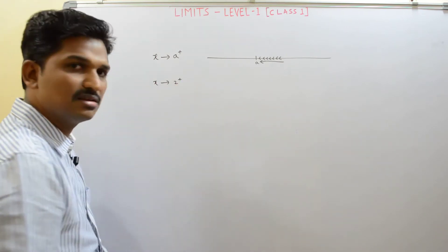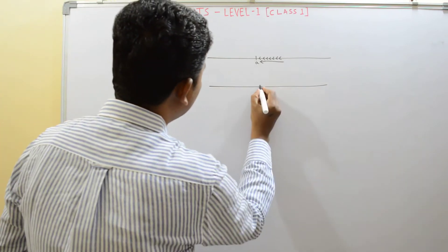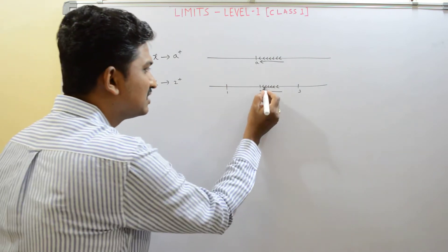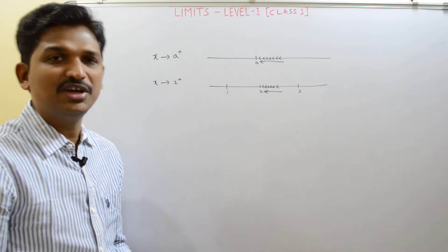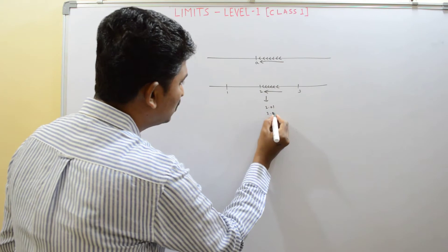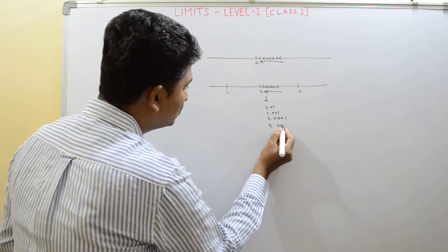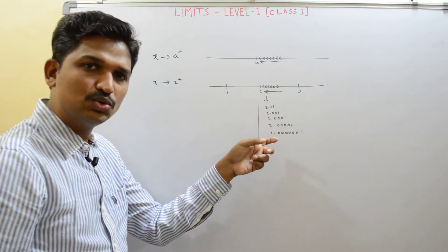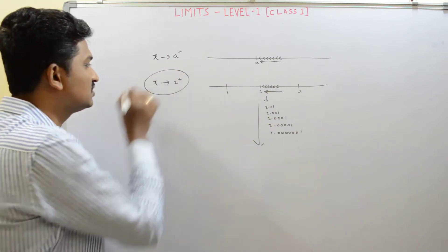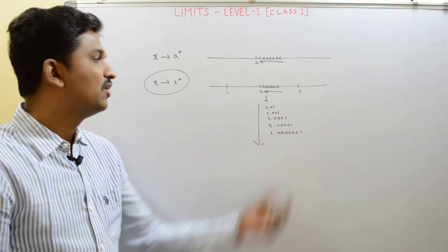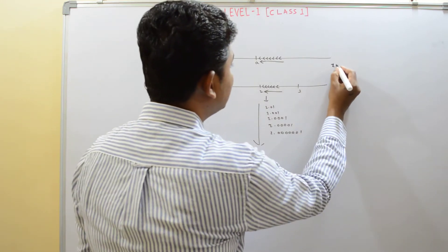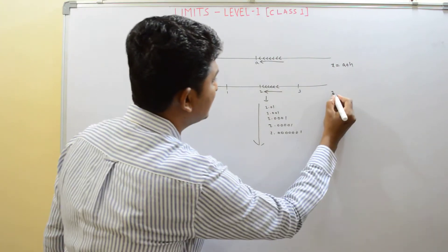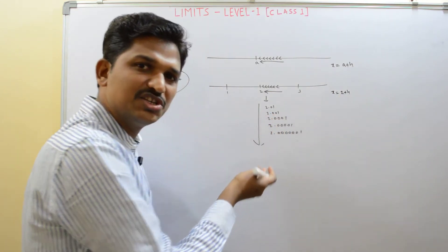Take x approaches to 2 plus — that means x approaches to 2 from the right. The values can be 2.01, 2.001, 2.0001, 2.0000001, and so on. All these values are greater than 2 and approaching to 2. We can write this as x equals a plus h, where h is a very small positive quantity. The smaller h is, the nearer to 2 you get.